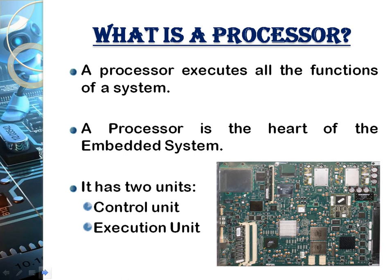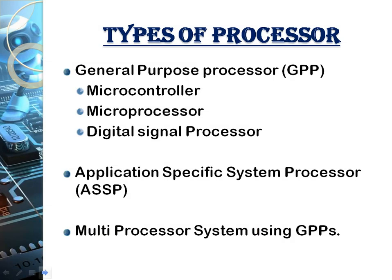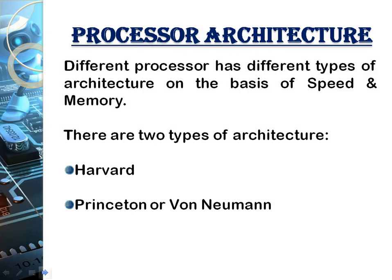A processor is the heart of an embedded system — it performs all the functions. It has two units: a control unit and an execution unit. The control unit sends control signals, and the execution unit performs the execution of all the commands. A processor can be a general-purpose processor, an application-specific processor performing only a particular task, or a combination of general-purpose registers forming a multi-processor.